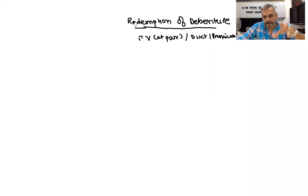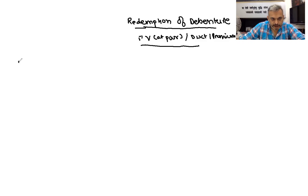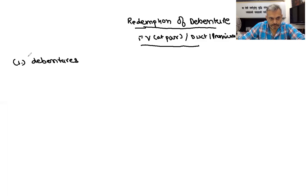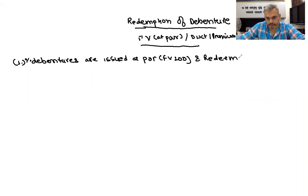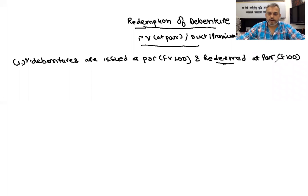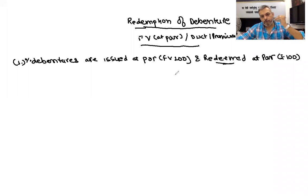Debentures cannot be redeemed at a discount. Now, the first heading: redemption of debentures where debentures are issued at par or at face value. Let's take face value as ₹100 and redeemed at par, meaning at the time of redemption we give back ₹100 to our debenture holder. Issued at par means we took ₹100 from debenture holders, and redeemed at par means we give back ₹100 per debenture.